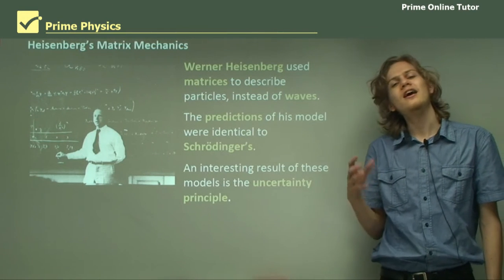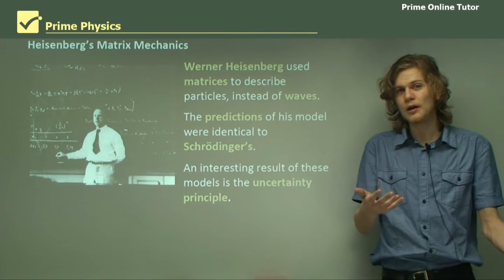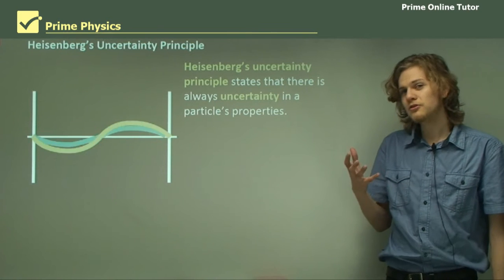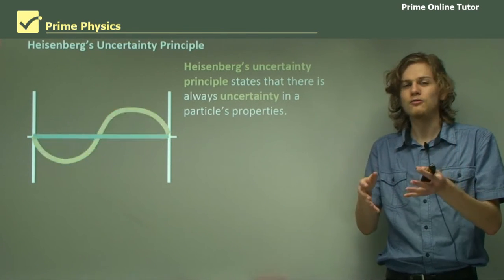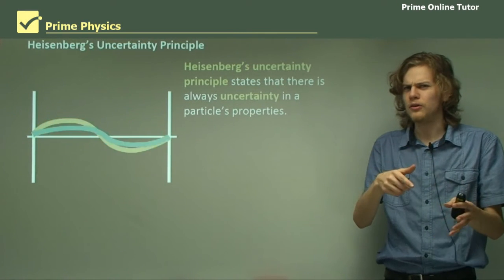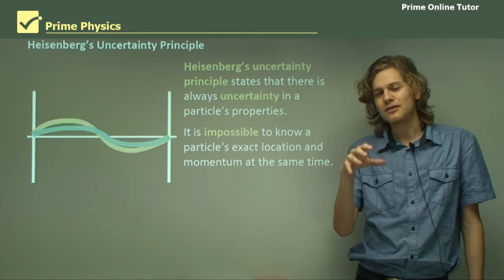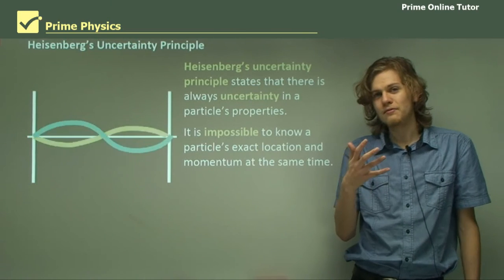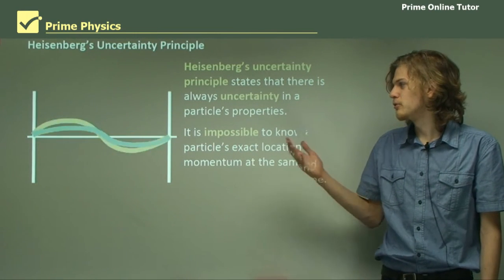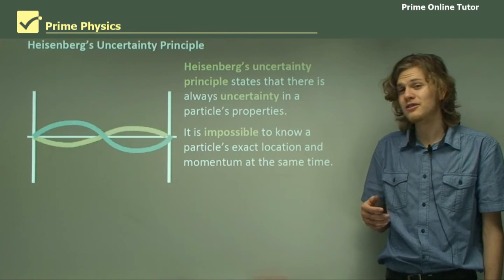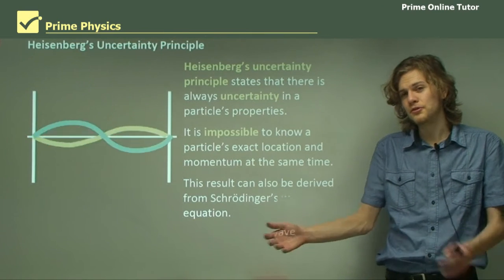An interesting result of these models is the uncertainty principle. Today we know it as Heisenberg's uncertainty principle, because he was the first one to explain and describe it. Heisenberg's uncertainty principle states that there is always uncertainty in a particle's properties. It is impossible to know everything about an electron all at once, because it's not ever everything all at once. It's impossible to know a particle's exact location and its exact momentum at the same moment. In Schrödinger's wave equation we can see that the values for these vary with time — we don't know where exactly the electron is. The result can also be derived from Schrödinger's wave equation, because of course the two theories are equivalent.